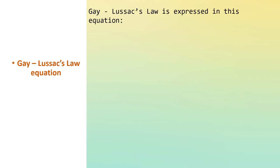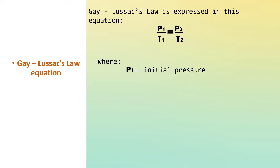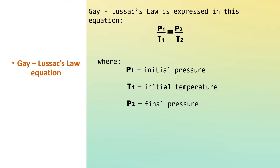Gay-Lussac's Law is expressed in this equation: P1 over T1 is equal to P2 over T2, where P1 means initial pressure, T1 means initial temperature, and P2 means final pressure.